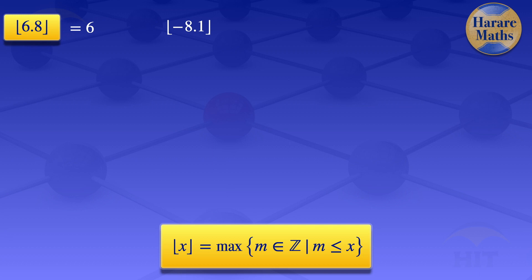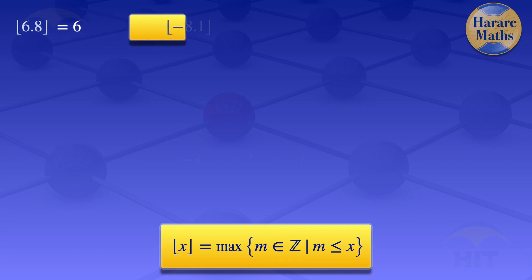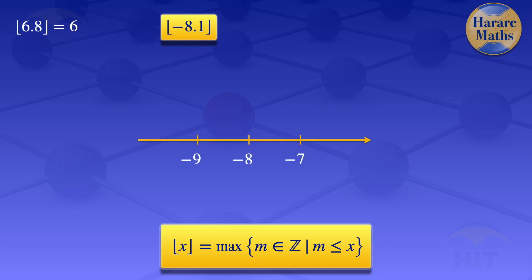I now move on to the next question where we are finding the floor value of minus 8.1. I will illustrate it with a number line showing the integers minus 9, minus 8, and minus 7, and label the value minus 8.1. The floor value of minus 8.1 is the greatest integer that does not exceed minus 8.1. Looking at the number line, the integers that do not exceed minus 8.1 are integers to the left of minus 8.1 — that is, minus 9, minus 10, and so on. The greatest of those integers is minus 9. So the floor value of minus 8.1 is minus 9.